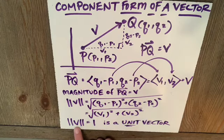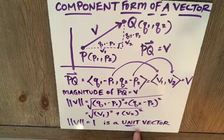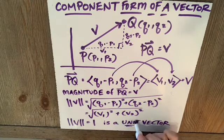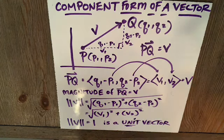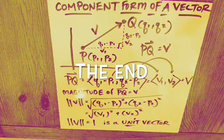By the way, if you find your magnitude is 1, that's a special case. We call that the unit vector. One unit of a vector, or the unit vector is a magnitude of 1.